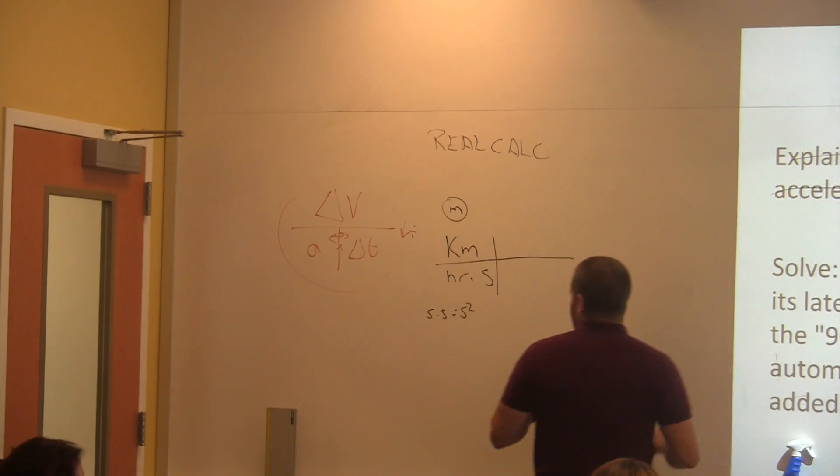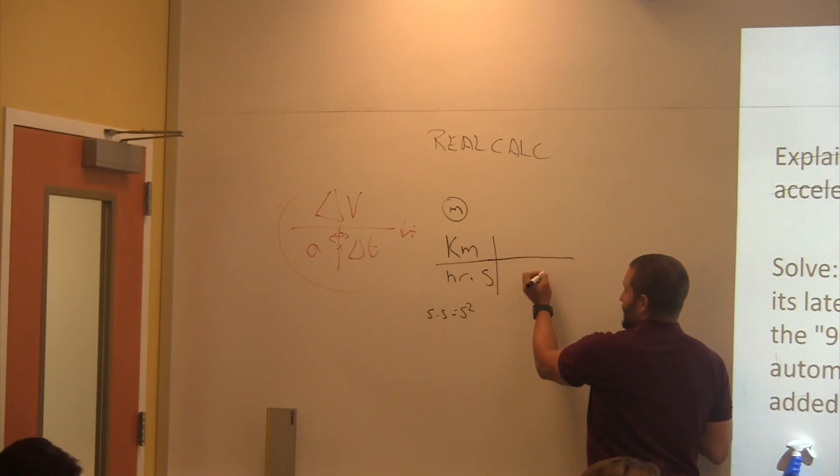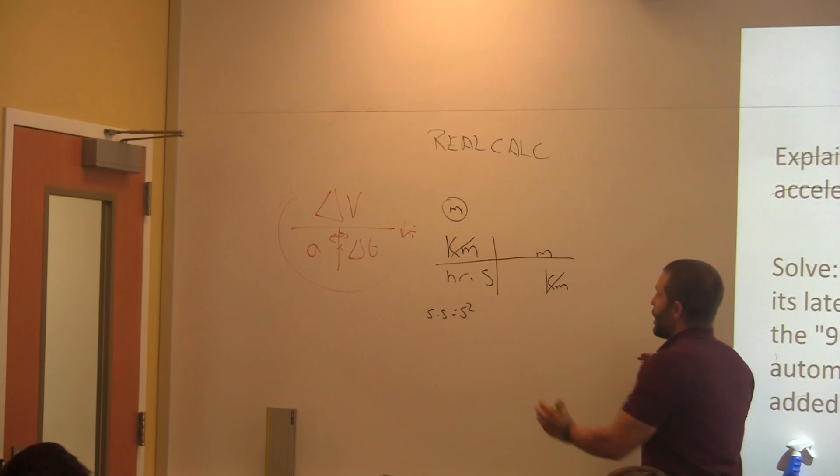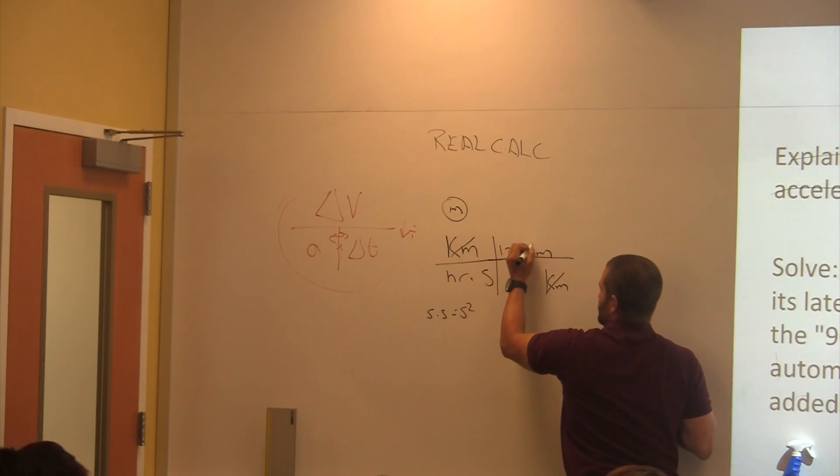Now, kilometers are going to go on bottom. Right? Yeah. Kilometers are going to go on bottom. Meters are going to go on top. Cancel. Cancel. There are a thousand meters in one kilometer.